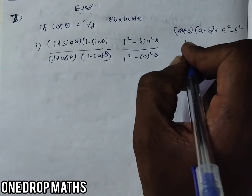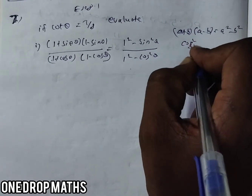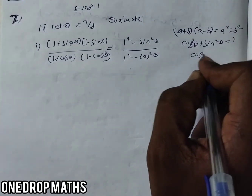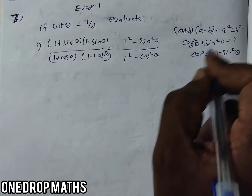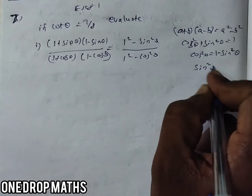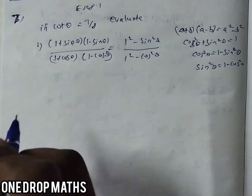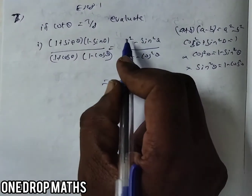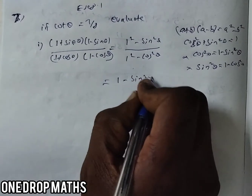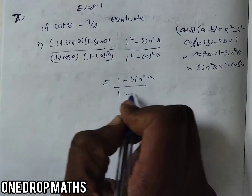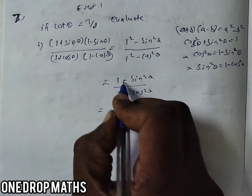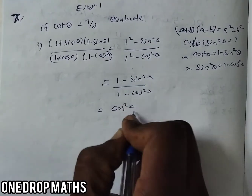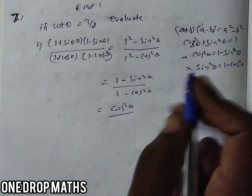Now remind yourself of one more identity in trigonometry: cos squared theta plus sin squared theta equals 1. From this we can write cos squared theta equals 1 minus sin squared theta, and similarly sin squared theta equals 1 minus cos squared theta. Using these identities, in the numerator we have 1 minus sin squared theta, which becomes cos squared theta, and in the denominator 1 minus cos squared theta becomes sin squared theta.